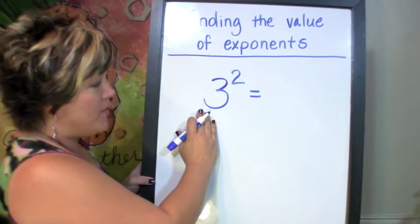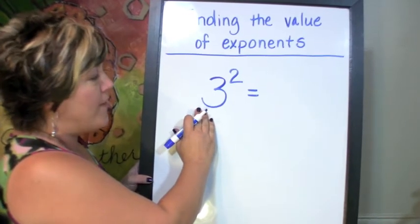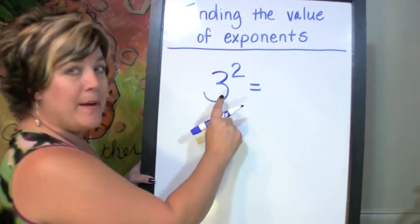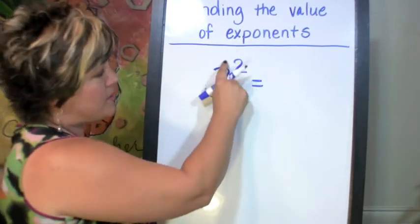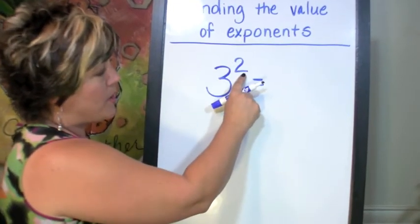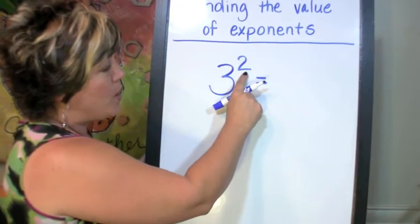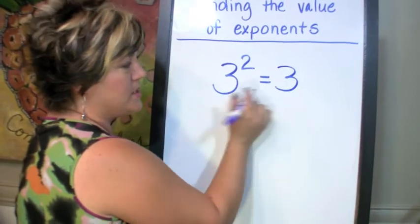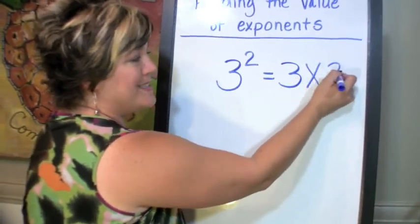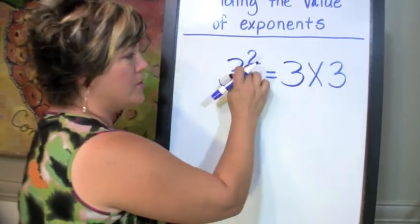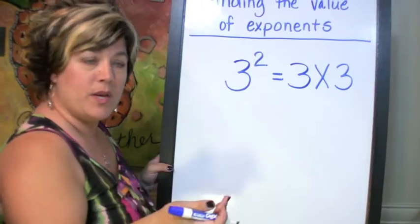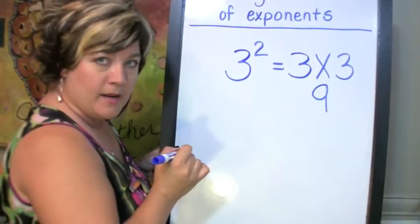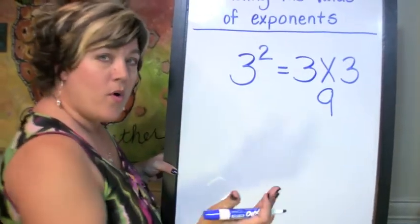To find the value of this, we have to remember that this is 3 times 3. So when it's to the exponent of 2, we would say that I'm going to multiply the base, which is this number, times itself, so it's 2 times — 3 times 3. So the value is going to be 9.